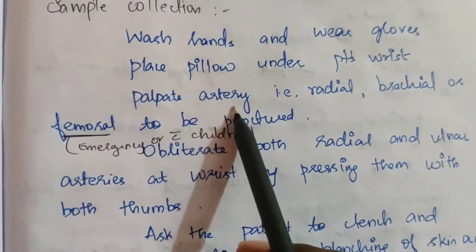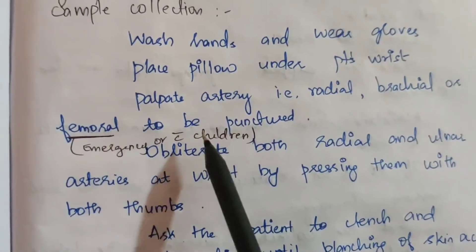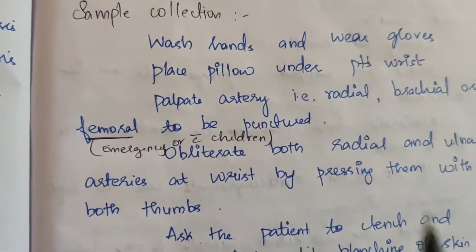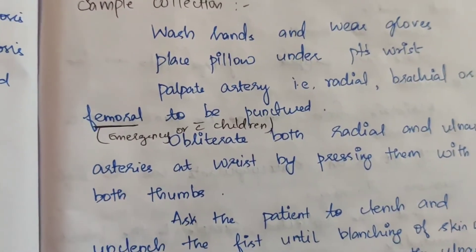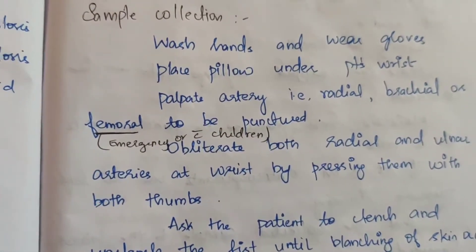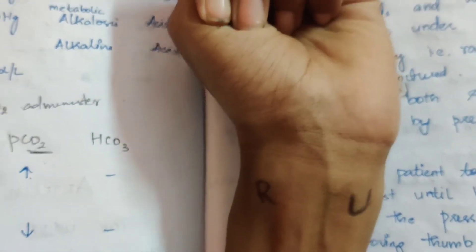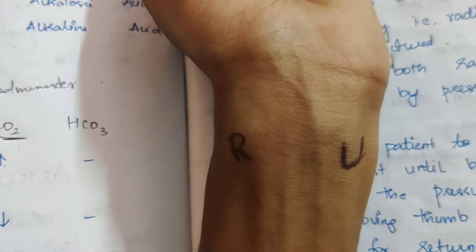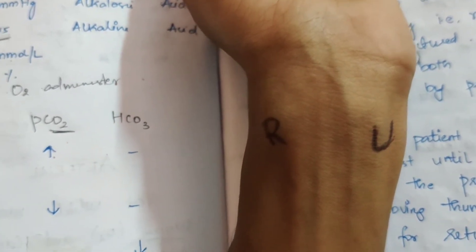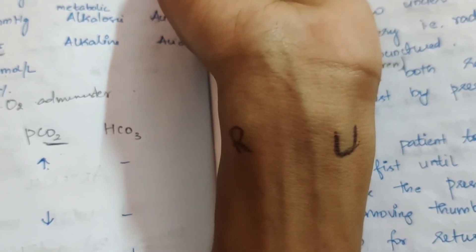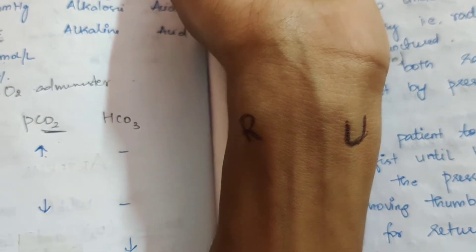Palpate the artery — radial, brachial, or femoral — to be punctured. The radial artery is on one side and the ulnar artery is on the other side of the wrist. We have to perform the Allen's test first. Palpate and feel both arteries.